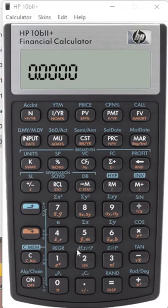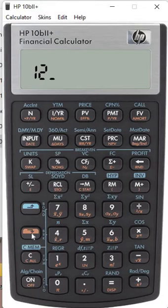Let's see, first we make it 12 payments per year. Shift, payment per year, 12 times.